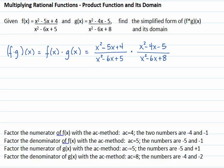We factor the numerator of f with the ac method. ac equals 4; the two numbers that multiply to 4 and add to negative 5 are negative 4 and negative 1. The factorization is x minus 4, x minus 1.